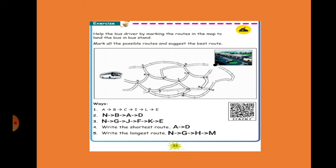Now see the second one. They have given one route, that is the bus route. From here this is the bus stand. Now how many ways this bus can reach to this bus stand. So first one they have already given. Then A, A to B, B to C, C to I, I to L, and L to E. Finally it will go like this.